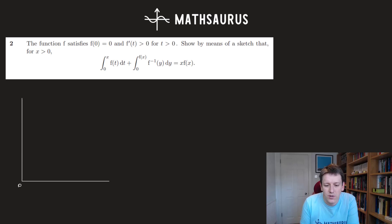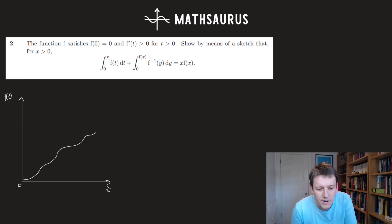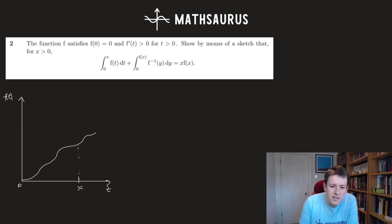So let's put 0 on the axes. I need a function with f(0)=0, starting at the origin, with a positive gradient for all t — always increasing. I'll draw a reasonably generic increasing function with that property. Let's put a point x on here and look at what this first integral is: the integral between 0 and x of f(t) dt. That's fairly easy — it's just this area under the curve.